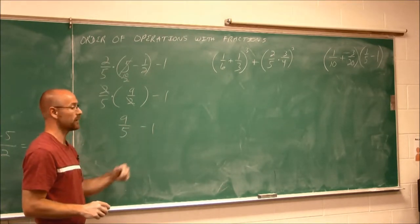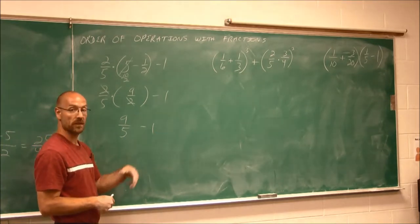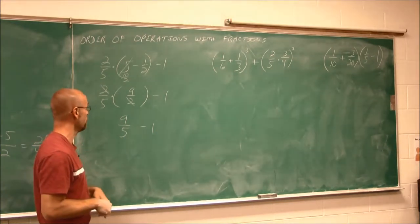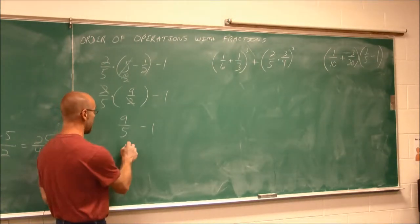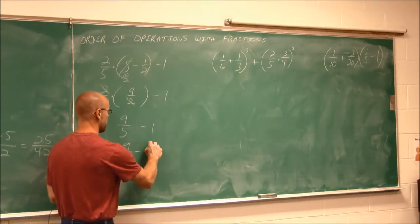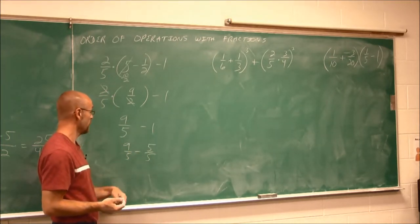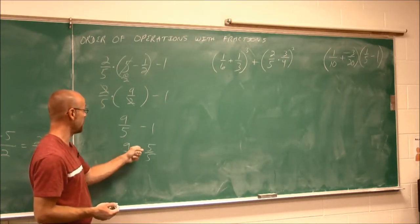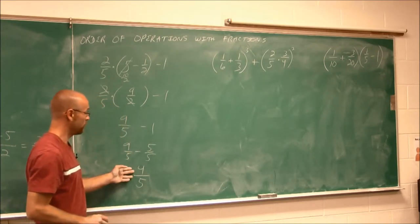But I still have to subtract that 1. It's our last operation. Now 1's a nice number, because I can turn it into any value as long as it's still equal to 1. I want a denominator of 5. So I'm going to rewrite it as 5 fifths. Any number over itself is 1. So now I can do that subtraction. 9 minus 5 is 4 over 5, 4 fifths.